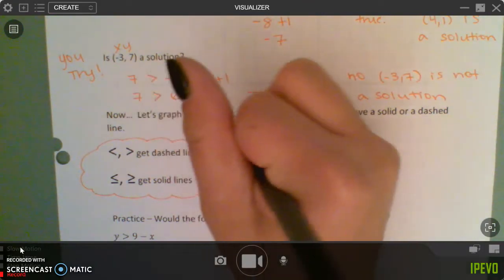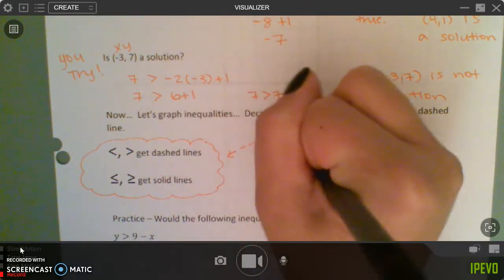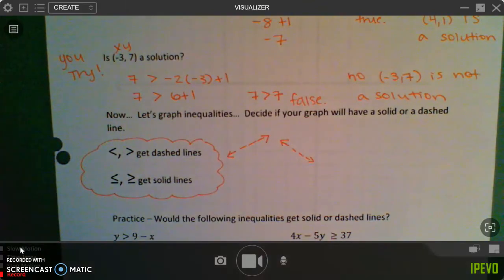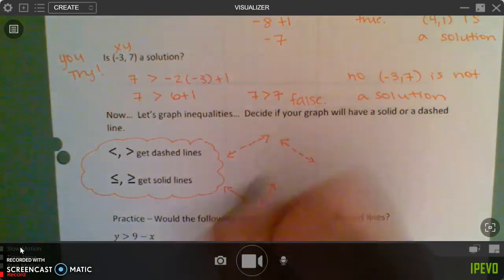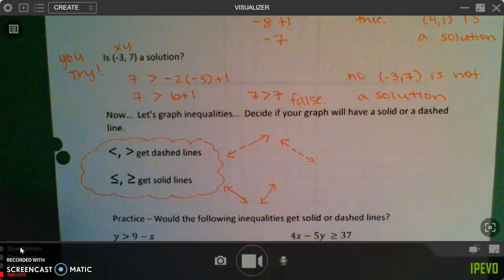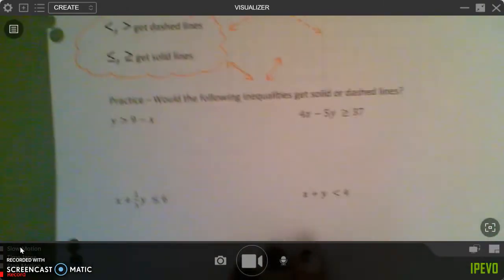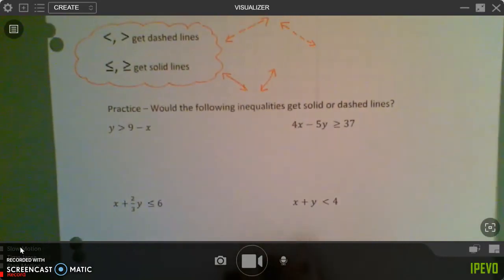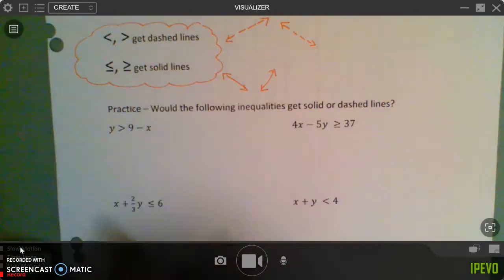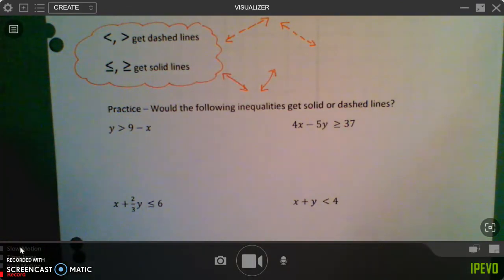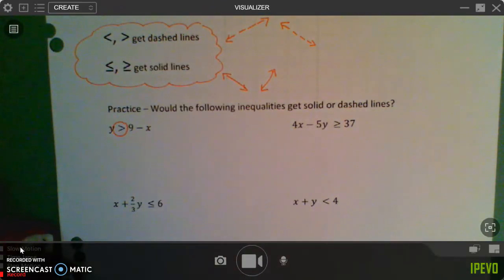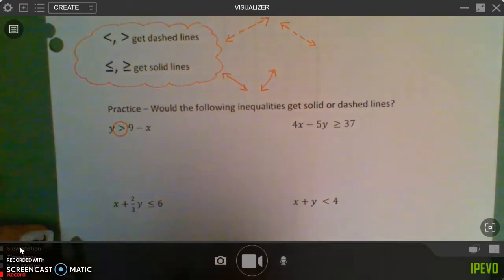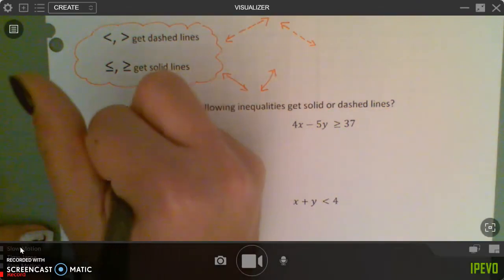So what that means is like when you're graphing it, a dashed line is going to look something like that, and solid lines are like what we've been working on. So down here, all we're doing is seeing if it's going to be dashed or solid. So remember, to see if it's dashed or solid, you're looking at the inequality symbol. So this inequality symbol does not have a line, so this is dashed.